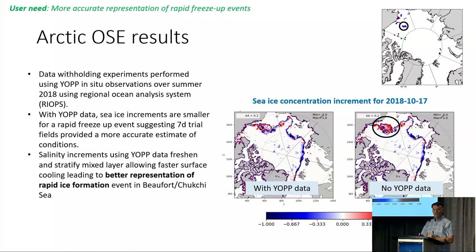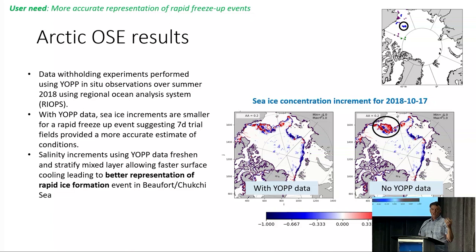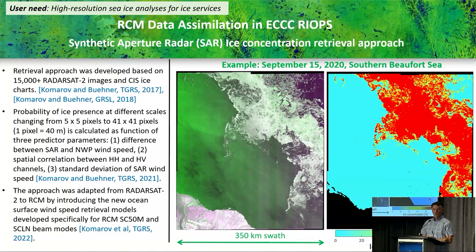To show a quick example of the impacts: this is a case of rapid sea ice formation over about a week in October 2018. The plots on the bottom right show sea ice concentration increments after a seven-day analysis cycle - the larger the increments, the worse your trial fields were. When we withhold the YOP data, we see bright colors in the middle of the black oval, whereas with the YOP data assimilated, we see much whiter colors in that area. The model better captures this rapid sea ice formation event by correcting errors in salinity and vertical stratification, increasing surface stratification, allowing faster venting of the surface seasonal thermocline and thus the rapid sea ice formation. This demonstrates that additional in-situ observations in the ice-free Arctic can benefit important applications like rapid sea ice formation prediction.